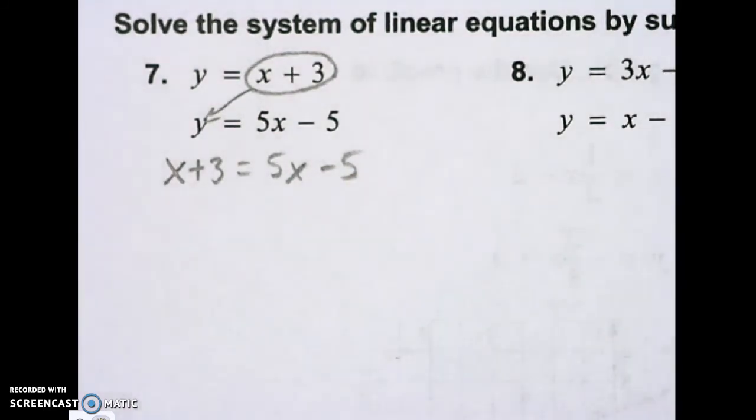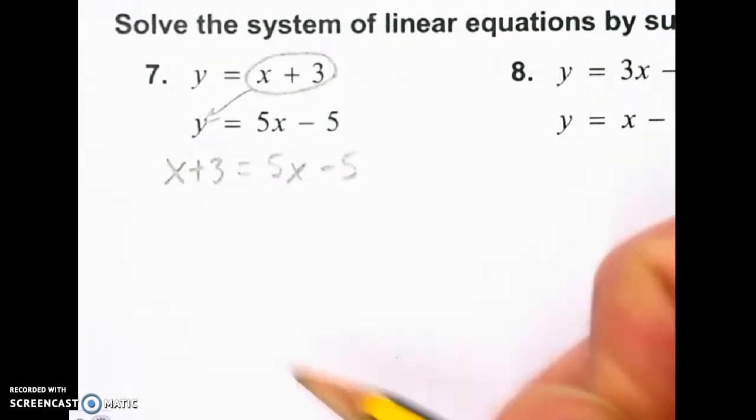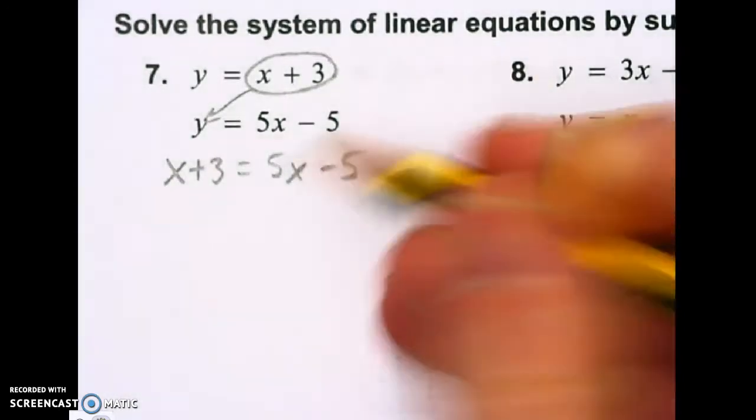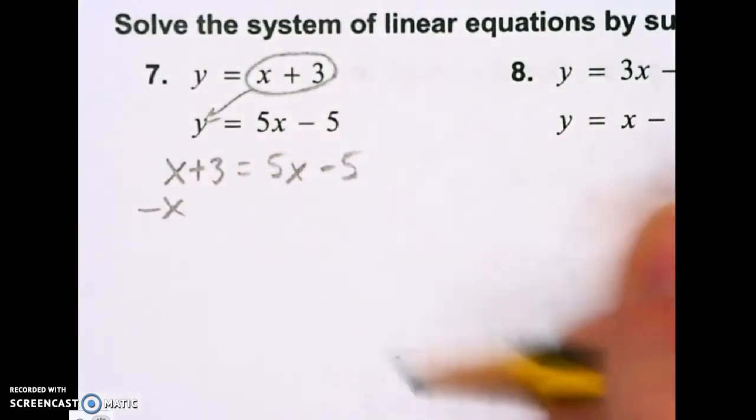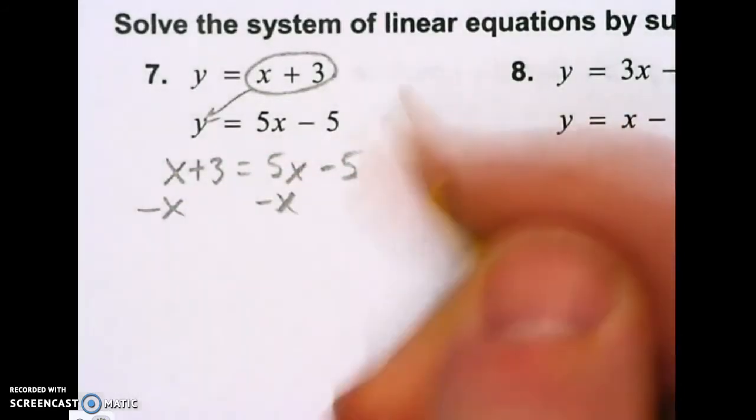When I rewrite, I took the y out and I put the x plus 3 in. I need to get x's on the same side. This side has a small amount of x's so I'm going to eliminate them off that side. I'll do the same thing on the other.